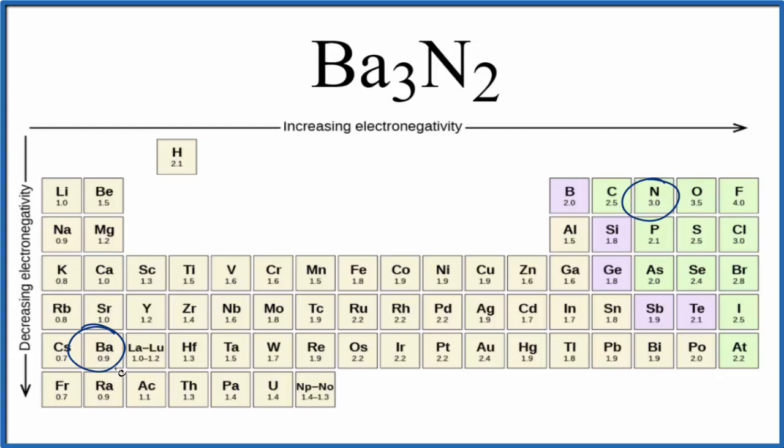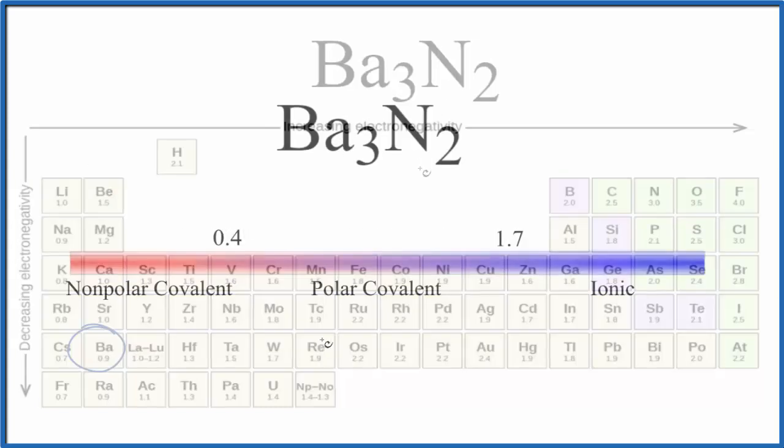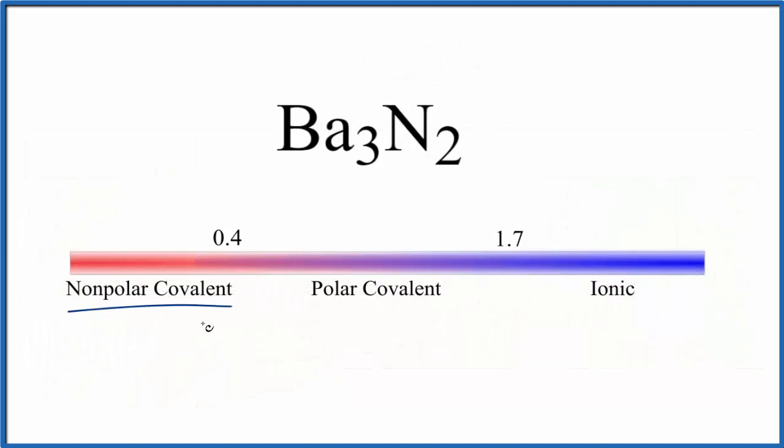So we're looking at the difference in electronegativity: 3.0 minus 0.9, that's 2.1. So let's look at a scale to see if this Ba3N2 is ionic or covalent. So here's the scale, we have nonpolar covalent here and on this side we have ionic. We said 2.1 was the difference between the bonds.